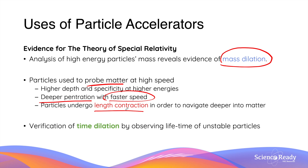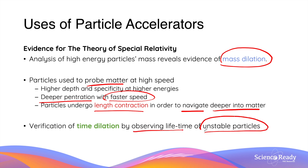This is because when particles travel faster they undergo length contraction to achieve a smaller dimension, and when the particles are smaller in dimension they can navigate deeper into matter due to reduced physical constraints. Furthermore, particle accelerators, through producing unstable particles such as second and third generation fermions, can also verify the effects of time dilation by observing the lifetime of these unstable particles. If the lifetime observed experimentally is consistent with calculations performed by accounting for special relativity, then this validates Einstein's theory of special relativity.